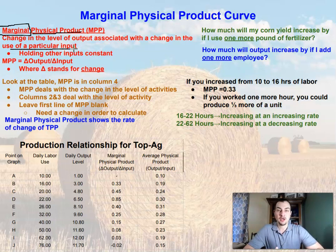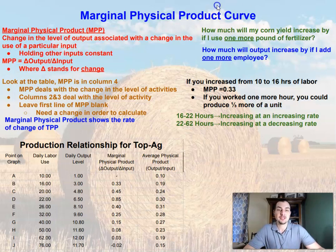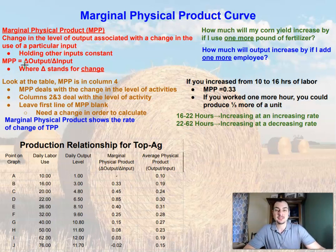Just like total physical product, we're going to look at how the number of inputs affects output. But now we're going to take it one step further and look at the change in output per change in input. We're holding all other inputs constant — a one input to one output scenario. We're only allowing labor to change, keeping land, capital, and management all the same. The formula for marginal physical product is the change in output divided by the change in input.